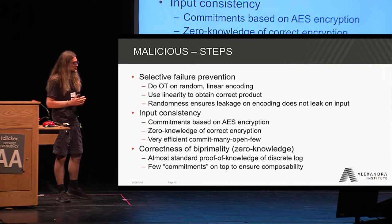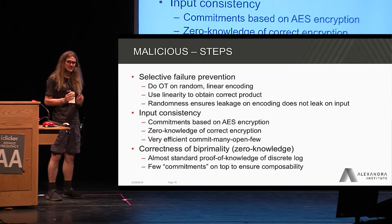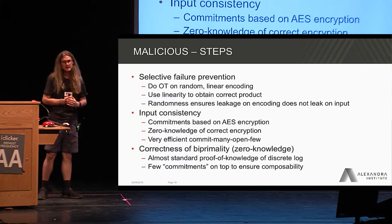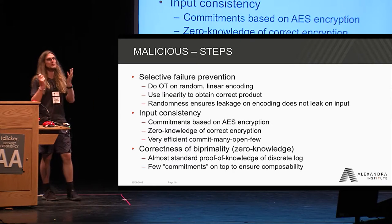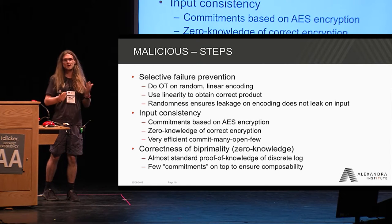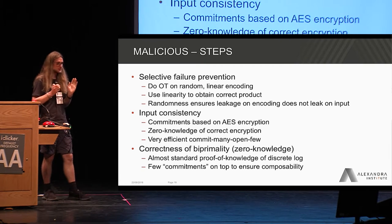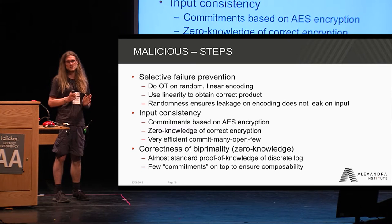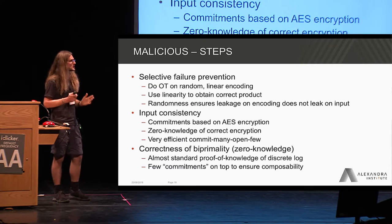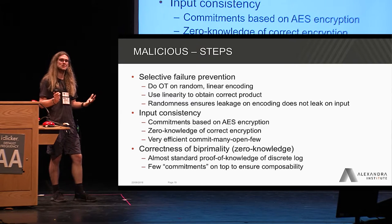The contribution is in how we actually do these steps. Selective failure prevention means that when we use OT in the malicious setting, there's almost always an issue where one party can input something malicious for choice 0 and something correct for choice 1, and then depending on whether the receiving party picked 0 or 1, an abort reveals information about that party's input. We show a way to do this very efficiently using random linear encoding. Efficiently here means we get an additive overhead of s, where s is a statistical security parameter, in the number of oblivious transfers needed — not a lot since we're multiplying very large numbers, meaning several thousand OTs.